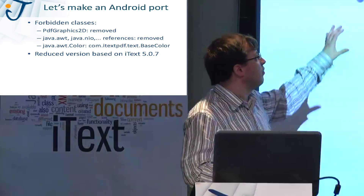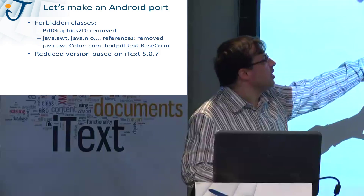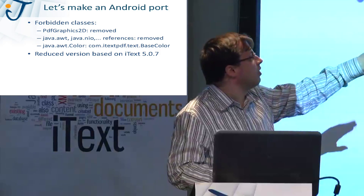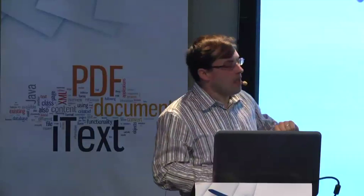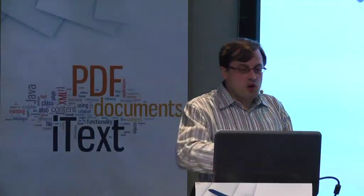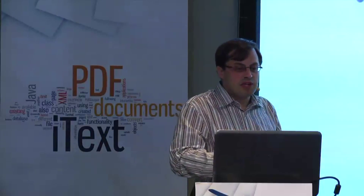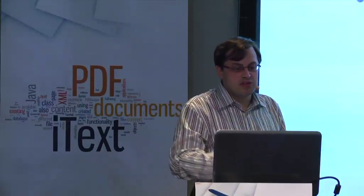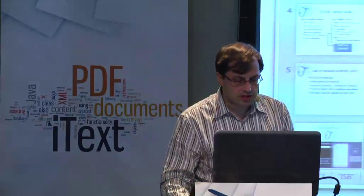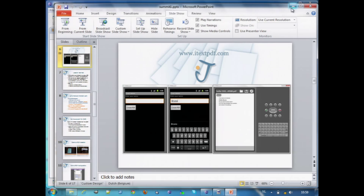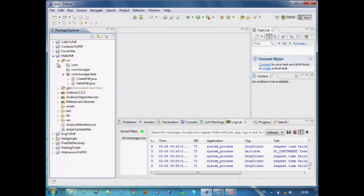But we didn't really need that color class, so we created our own itext.pdf-based color class. The first attempt we did was create a reduced version of iText based on iText 5.0.7. And I'm going to show a small example.